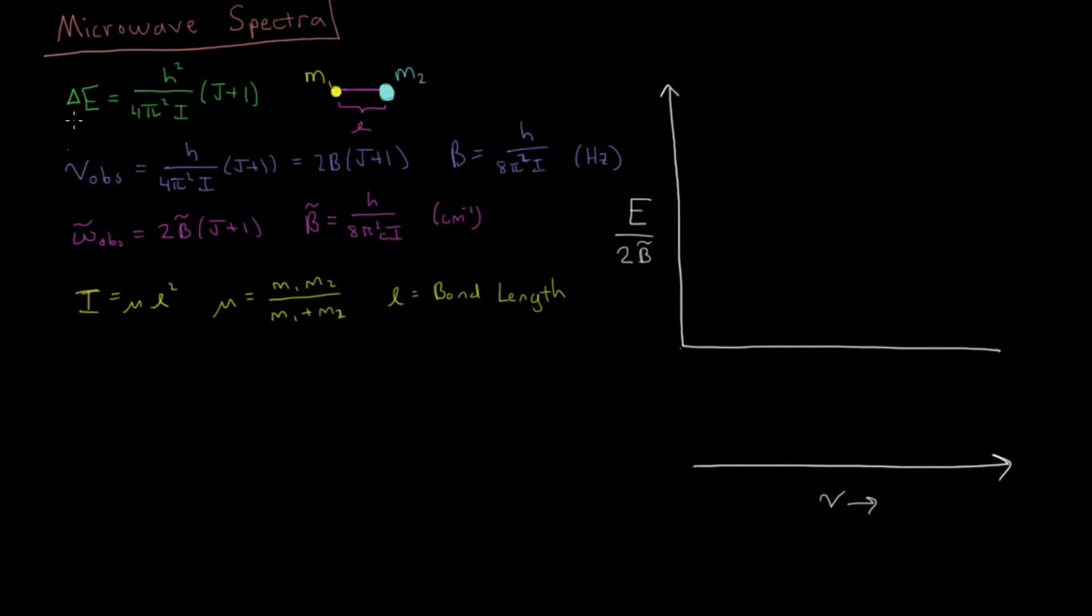So to convert this to frequencies, we know delta e equals h nu, so the frequency is this same expression, but divided by h, so we go from h squared to h, also equal to 2b times j plus 1, where this constant b in hertz is just h over 8 pi squared i. So if you're given a specific molecule with a specific bond length, you can derive from their individual masses and bond length what this moment of inertia is and what this rotational constant is.